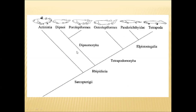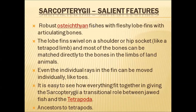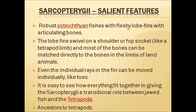This is the classification and systematic position of the Sarcopterygii group. Now let us discuss the salient features of Sarcopterygii. These fishes are very robust in size and belong to the Osteichthyes class. The major important character is that they have fleshy lobe fins — Sarcopterygii means lobe-finned fishes. All other fishes have fins, but the fins do not have flesh or muscles; these fishes, however, have muscles in their fins.